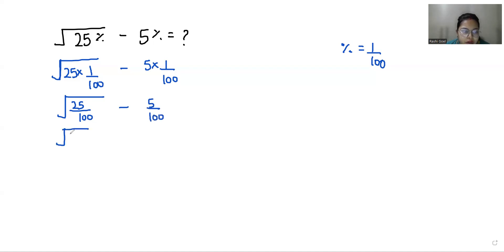So under root 25, 25 we can write it as 5 times 5 by 100 as 10 times 10 minus 5 by 100.